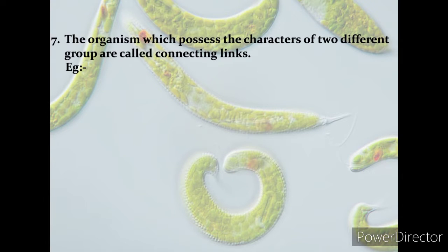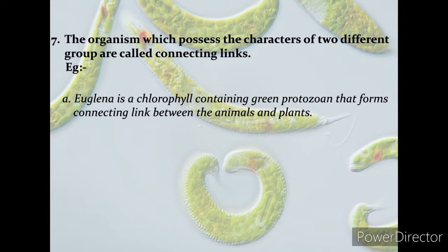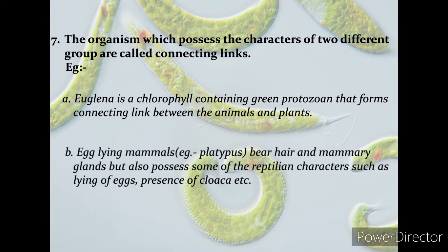Organisms which possess characters of two different groups are called connecting links. For example, Euglena is a chlorophyll-containing green protozoan that forms a connecting link between animals and plants. Egg-laying mammals like the platypus bear hair and mammary glands but also possess reptilian characters such as laying of eggs and presence of a cloaca. From these examples we get evidence of evolution from morphology and anatomy.